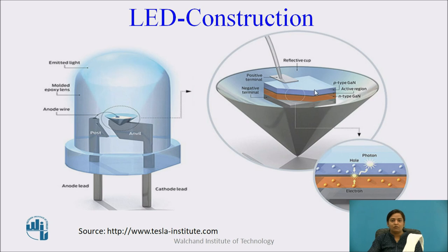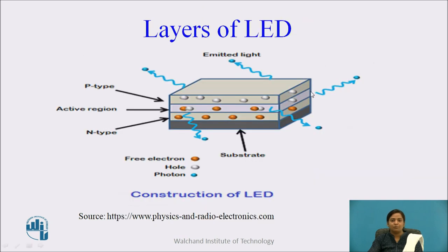We will see how this structure of LED is made. There are three basic layers: P-type semiconductor, N-type semiconductor, and in between that, the active region, that is the depletion region. The P-type semiconductor consists of majority charge carrier holes. The N-type semiconductor consists of majority charge carrier electrons. The depletion region consists of immobile ions. Most of the photons are emitted from this depletion region, so this region is called the active region.